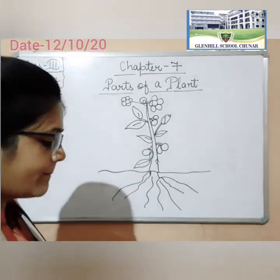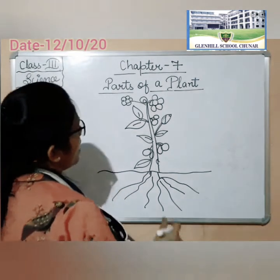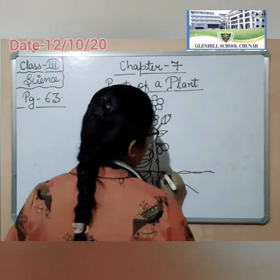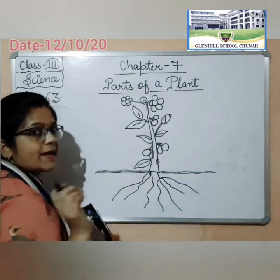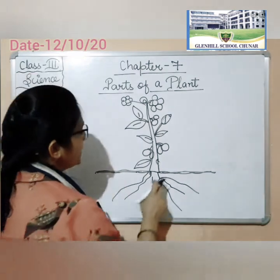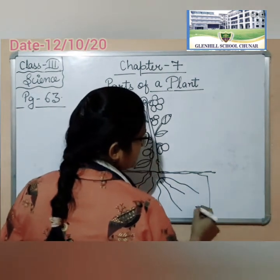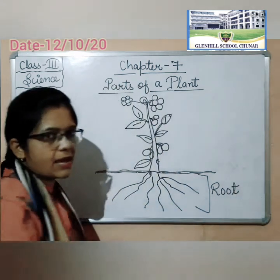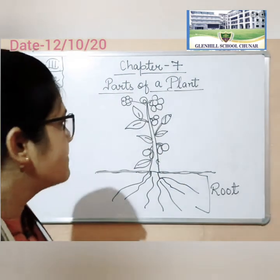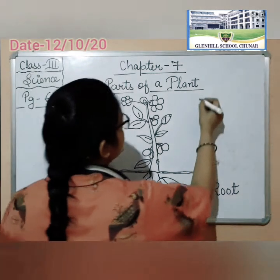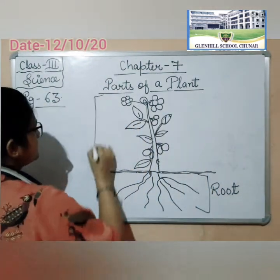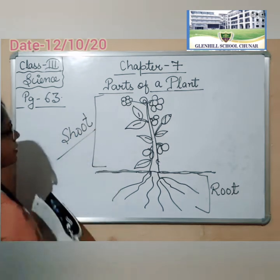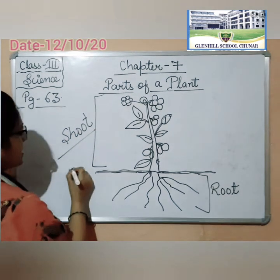Yeh sab plants ke parts hai. So you can see — it is what? Soil. Yeh jo part hai — yeh kya hai? Aapka soil hai. Soil ki jo niche, below wali jo part hoti hai, woh kya hoti hai? Root. Isse root system bhi kaha jata hai — root system. And the part above — yeh this one — it is what? Shoot. Isse kya bola jata hai? Shoot. Yeh beech mein aapka kya hai? Soil.